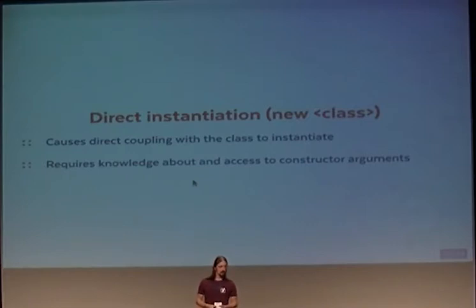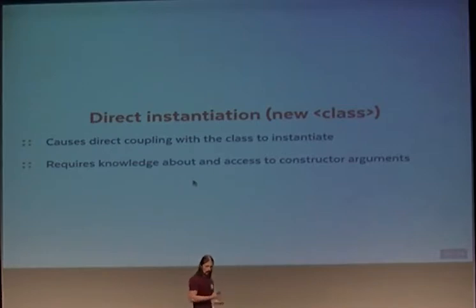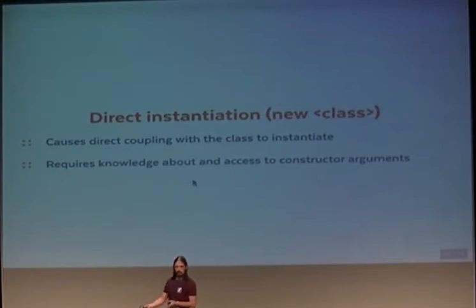First, you have direct instantiation — 'object = new class'. Direct instantiation always produces direct coupling to the class you refer to, because you cannot instantiate an interface or something abstract — only actual implementations. It also requires knowledge about the constructor arguments: if your constructor requires a database driver instance and a logger driver instance, you need both available to instantiate.